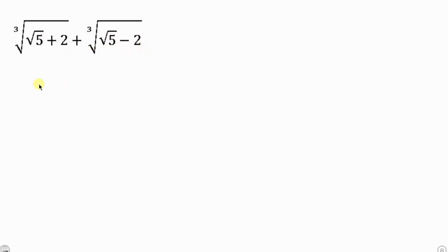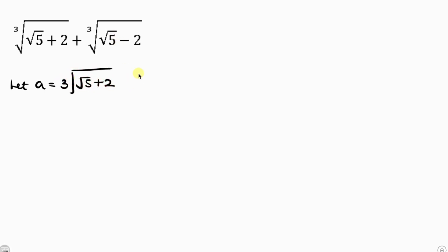Our first step towards solving this question is to say: let A be equal to the first expression, which is the cube root of the square root of 5 plus 2, and let B be equal to the second expression, which is the cube root of the square root of 5 minus 2.